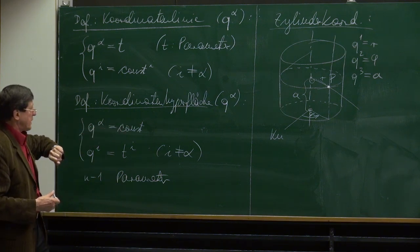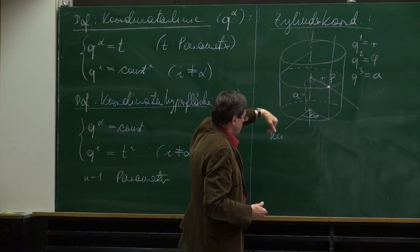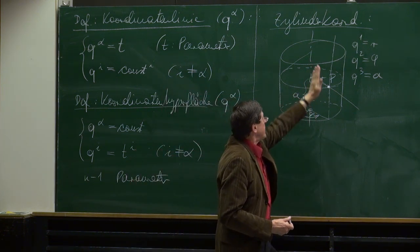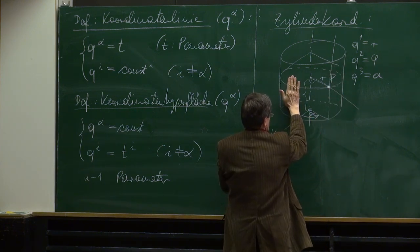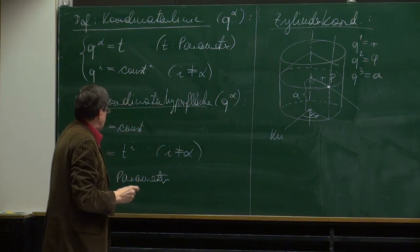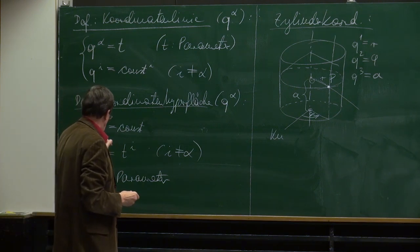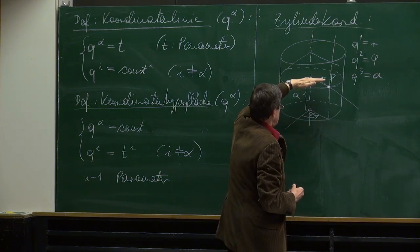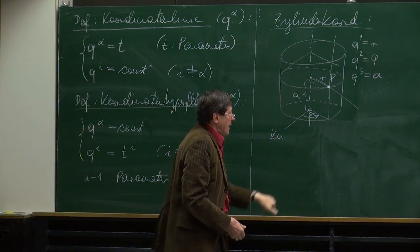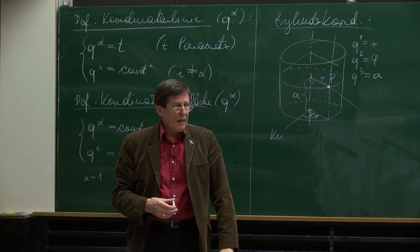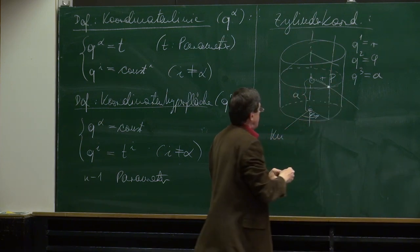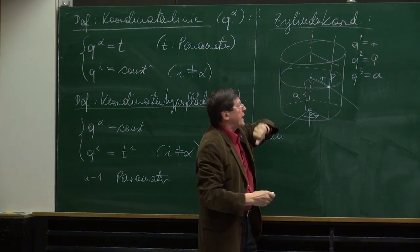Dann haben wir Q2 konstant, also Phi konstant. Was ist, wenn Phi konstant ist und alles andere variiert? Dann erhält man eine Fläche, die durch die Achse hindurchgeht und hinauszeigt. Die letzte: die A-Koordinatenfläche. Q3 konstant, A ist konstant – eine bestimmte Höhe ist konstant, sonst variiert alles. Das sind Schnitte, wie Salamischeiben. Also: das eine ist der Zylinder, das andere sind Flächen durch die Achse, und die dritte sind Ebenen senkrecht auf die Achse.